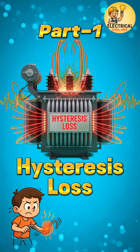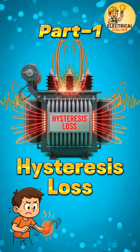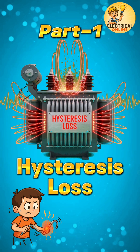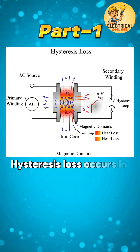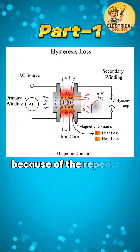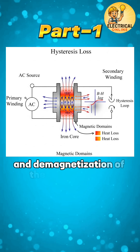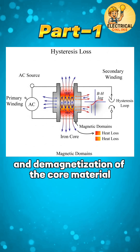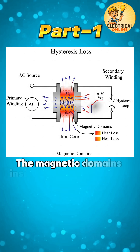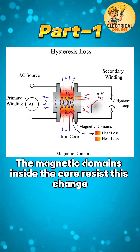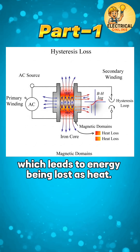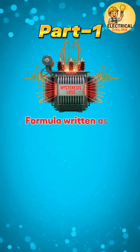Let's begin with the first loss that happens even when the transformer isn't doing any work: hysteresis loss. Hysteresis loss occurs in the transformer's iron core because of the repeated magnetization and demagnetization of the core material during each AC cycle. The magnetic domains inside the core resist this change, which leads to energy being lost as heat. The formula is written as: